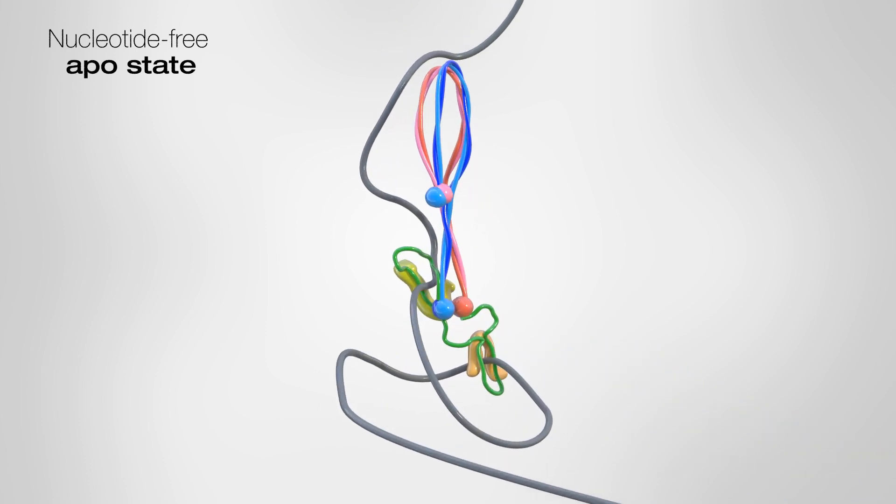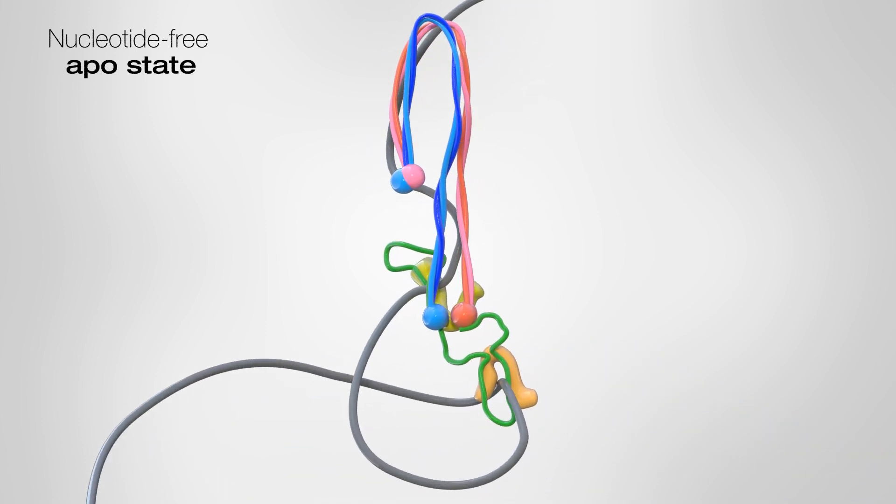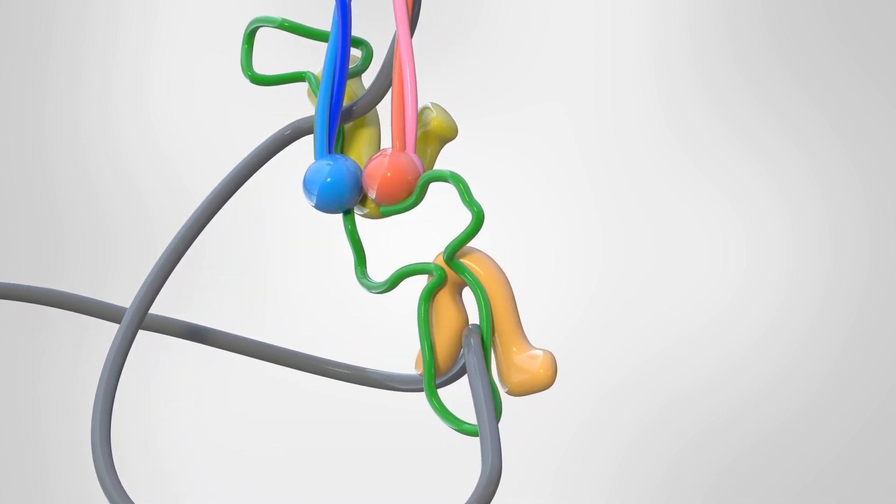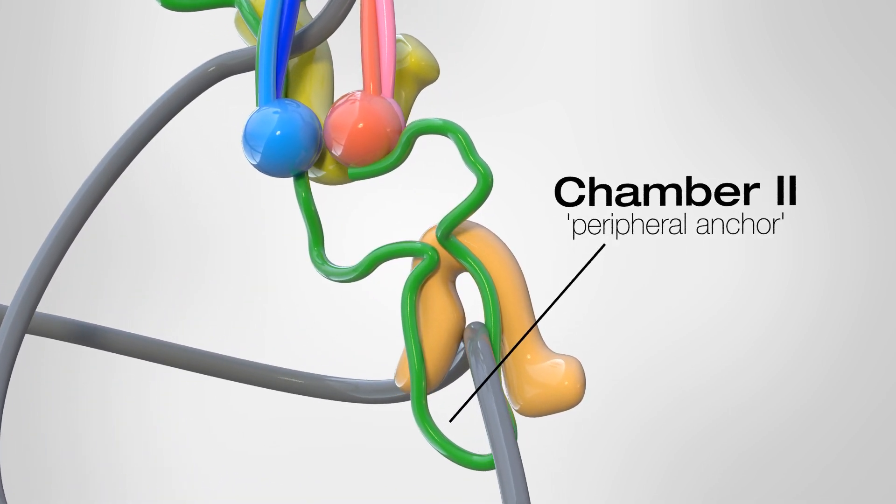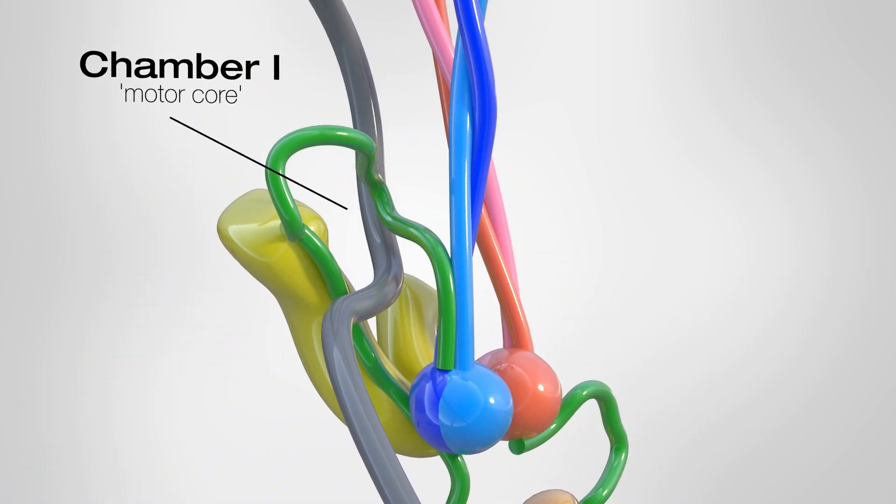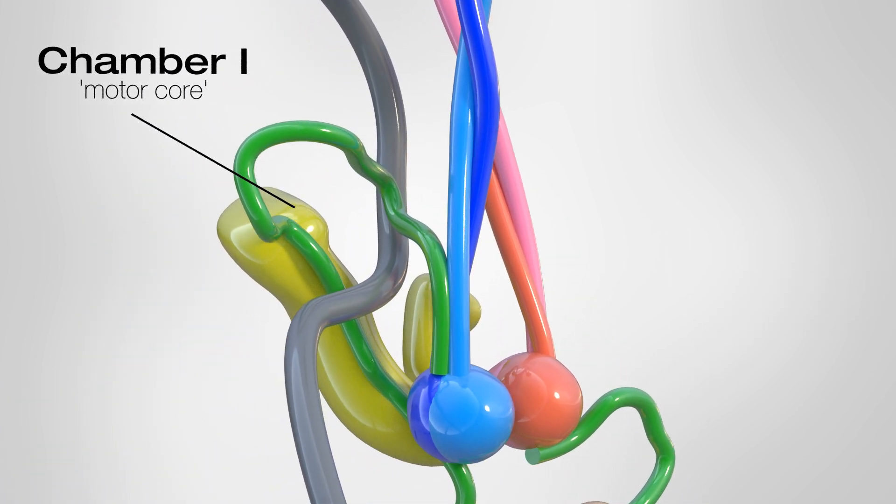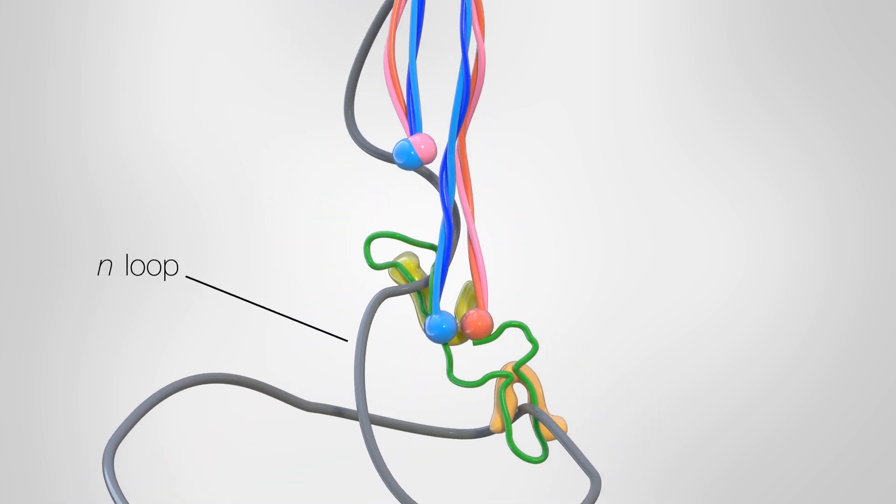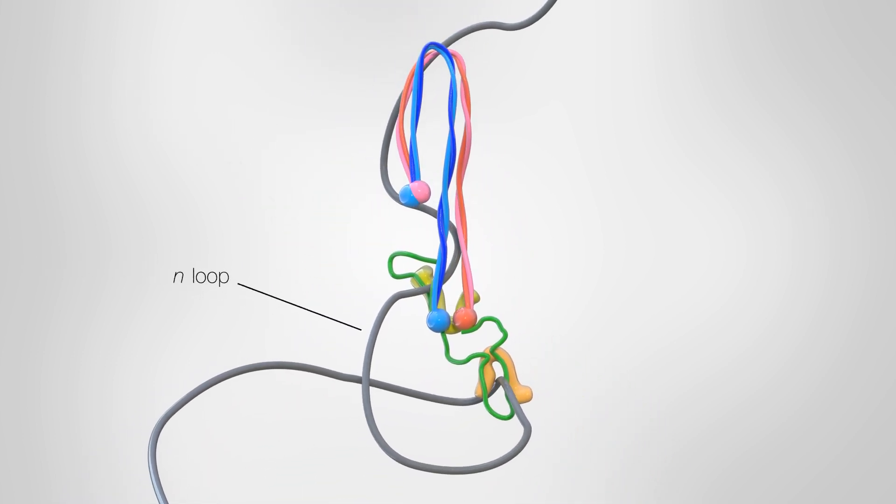Before ATP binds, we determined that condensin holds its DNA in two chambers. By cutting these chambers open while watching single condensins making loops, we discovered that the one at the orange subunit serves to anchor the non-growing arm of the loop, and the chamber at the yellow subunit holds the dynamic arm of the loop from which the loop grows. The growing loop is thus contained between the two chambers.